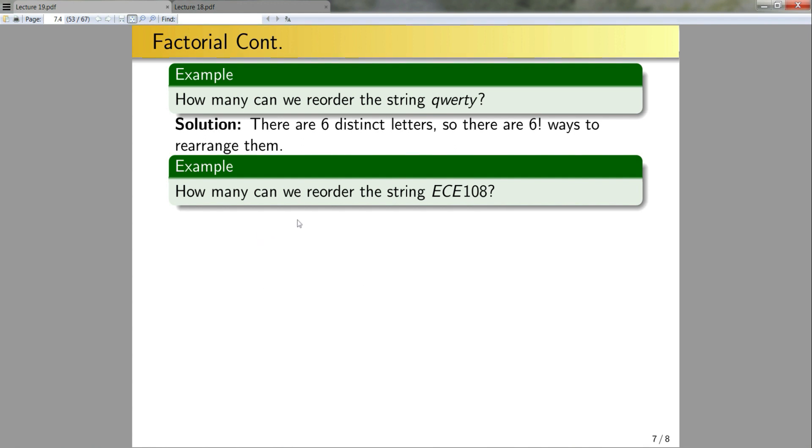Now I can ask, how many ways can I reorder the string ECE108? In this case, I have letters E, C, E, 1, 0, 8. There's six letters, but two of them are repeated. We have a little bit of extra stuff we have to potentially contend with here. Just using what we've done previously, I know there's six symbols. So we might think that there are 6 factorial ways to rearrange them. But again, there are two E's. If I swap the two E's, I get the same string. It doesn't matter which E goes where.